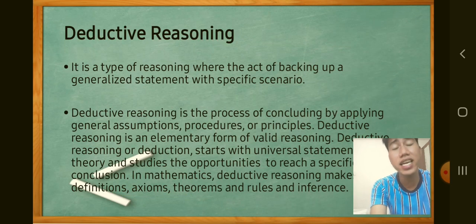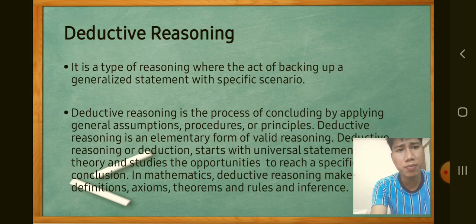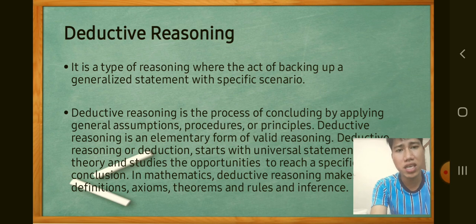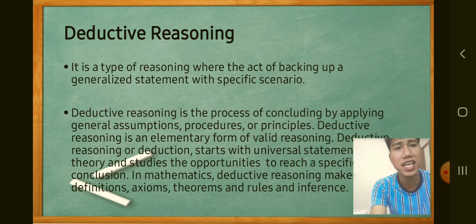Deductive reasoning is a type of reasoning where you support a general statement with specific scenarios. It is the process of reaching a conclusion by applying general assumptions, procedures, or principles. Deductive reasoning starts with a universal statement and then moves to a specific conclusion. In mathematics, deductive reasoning uses definitions, axioms, theorems, rules, and inference. In short, deductive reasoning goes from general to specific.